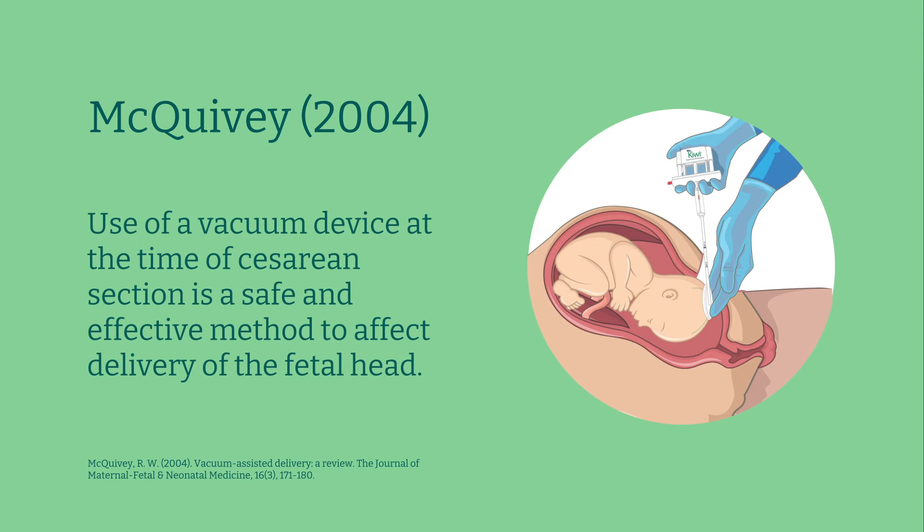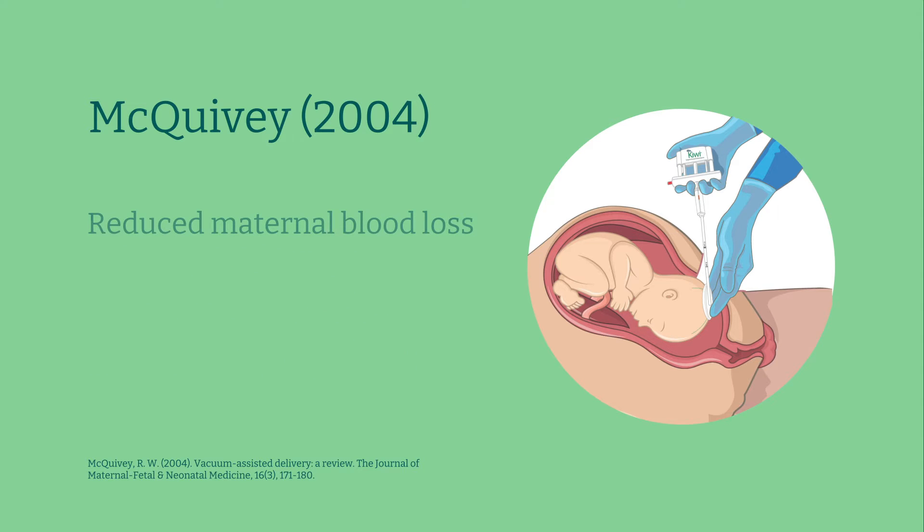The study showed that use of a vacuum device at the time of cesarean section is a safe and effective method to affect delivery of the fetal head. It concluded that use of the vacuum device results in reduced maternal blood loss, fewer hysterotomy extensions.